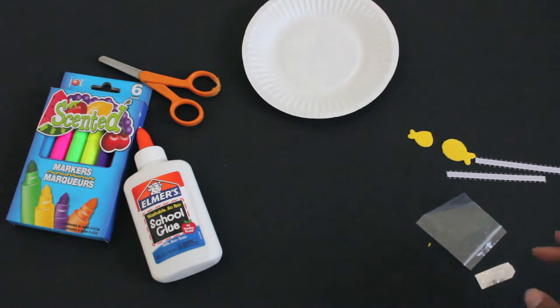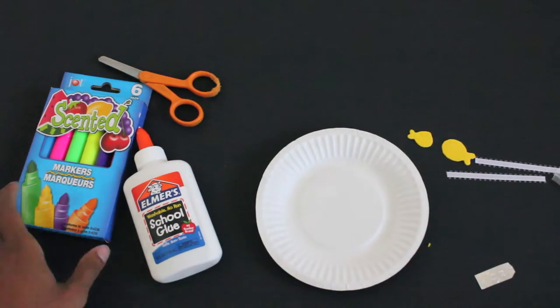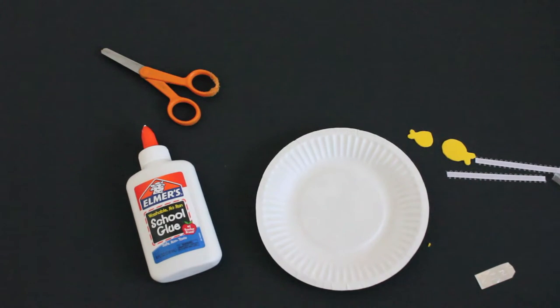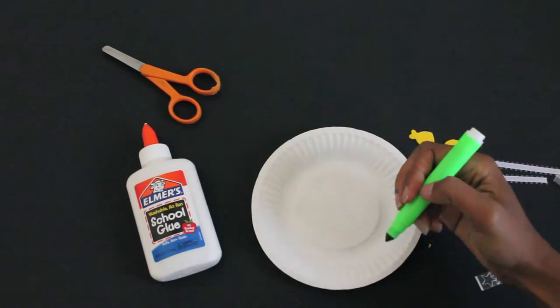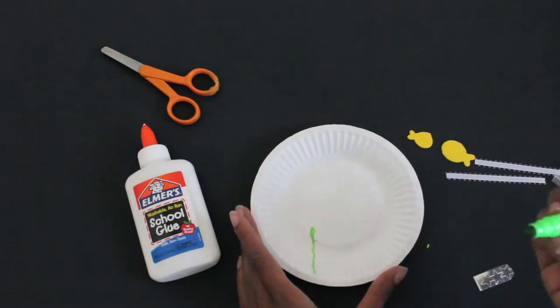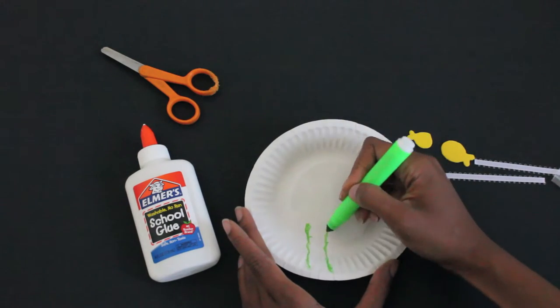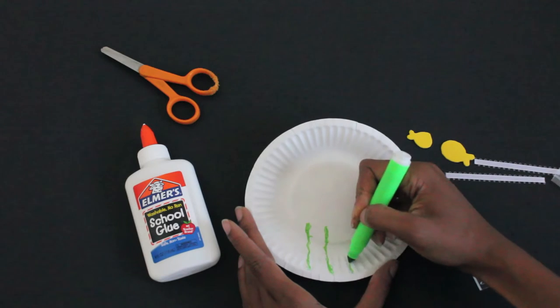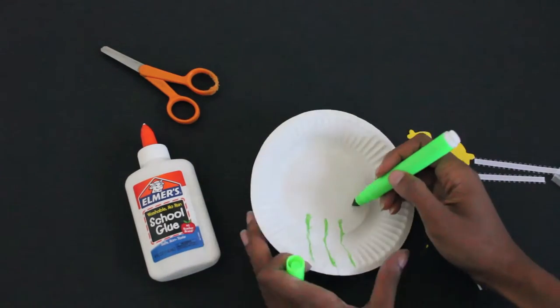The first thing we're going to do is prepare the back of the aquarium. Get your markers and decorate the aquarium however you think an aquarium should look. I think I'm going to use my green marker and make some seaweed. Seaweed is like grass except inside of the ocean. So I think my aquarium would have that. There we go. Let's see. Let's make some more seaweed.